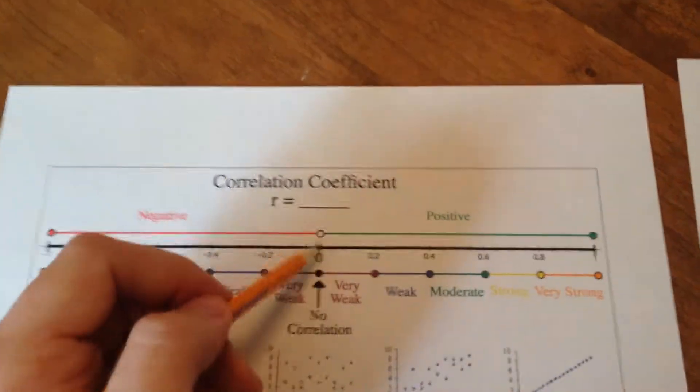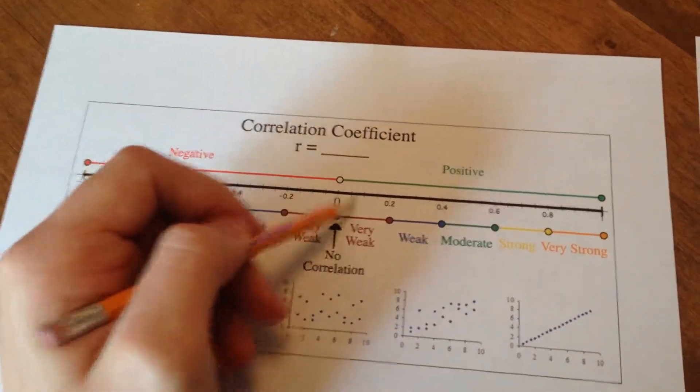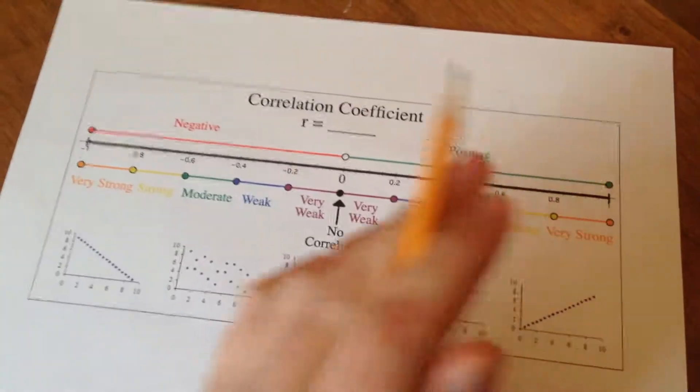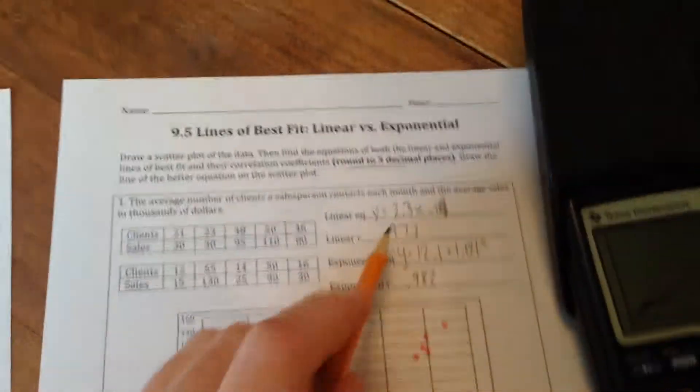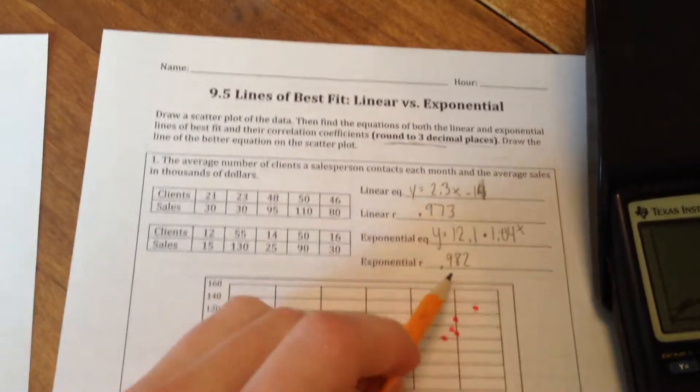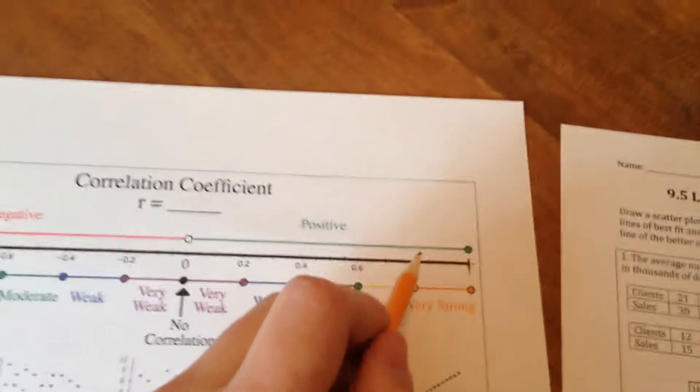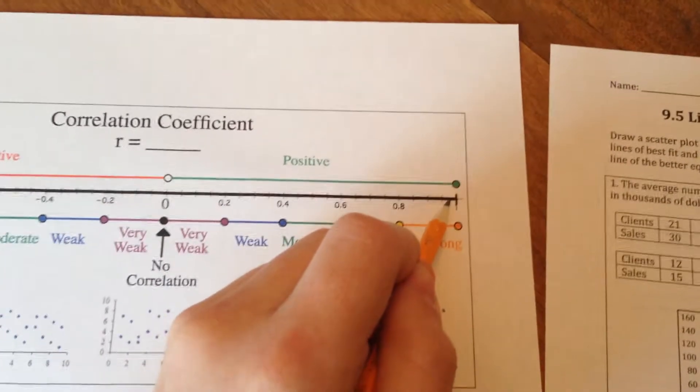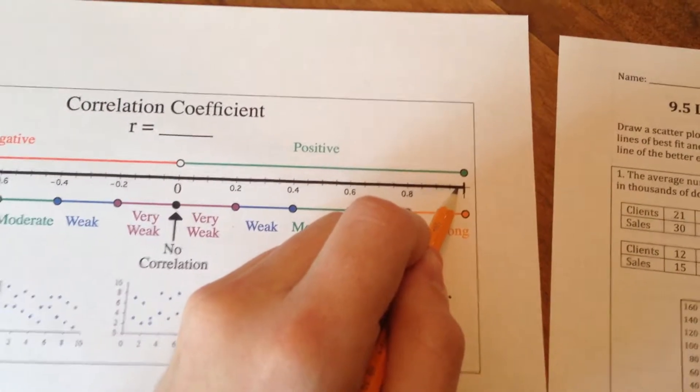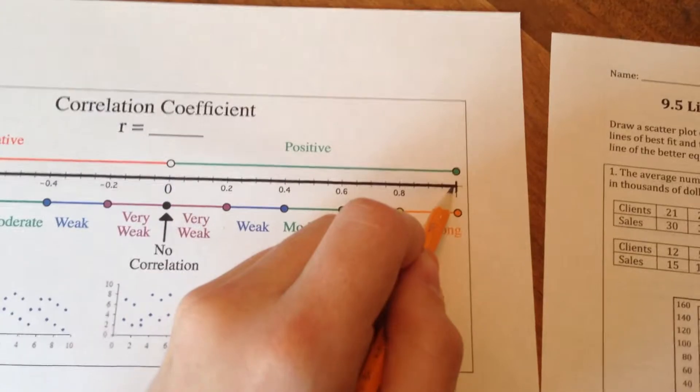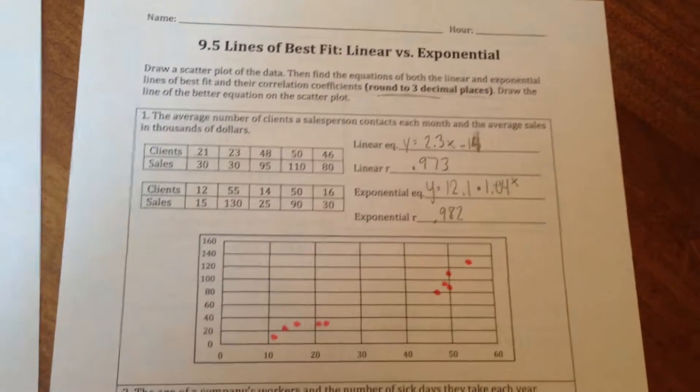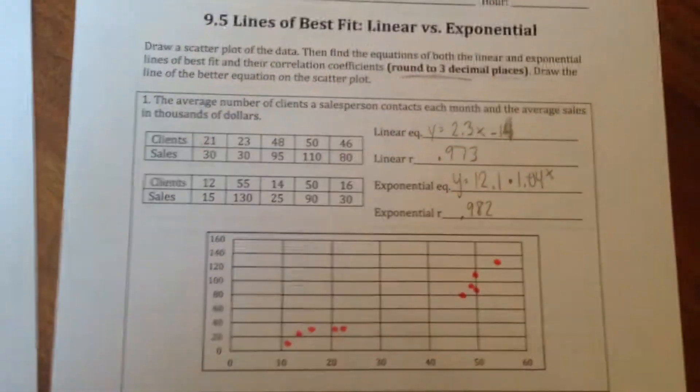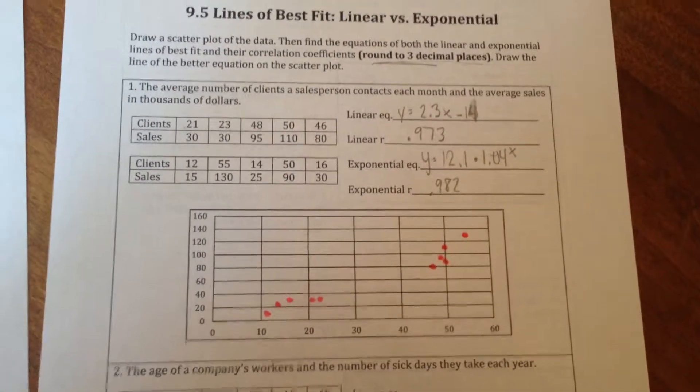And remember, we can compare the correlation coefficients to kind of this number line that I've created for you guys. So the idea of the correlation coefficient is that the farther away we are from 0, the stronger the correlation. The better fit that line is. So here we're going to be comparing 0.973 to 0.982. They're both so, so close. But they're a little tiny bit different. So here we go. 0.973 is going to be somewhere over here. But 0.982 is going to be just a tiny bit closer to positive 1. So since the exponential correlation coefficient is just a little tiny bit closer to positive 1, that's going to be our better line.